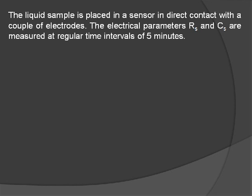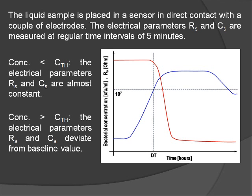The working principle of the impedance technique for bacterial concentration measurement is here presented. The sample under test is placed in a sensor vial that features a couple of electrodes to measure the electrical parameters. The sensor is incubated at a temperature favoring bacterial growth and the electrical parameters are measured at time intervals of 5 minutes. The sample bacterial concentration, plotted in blue, and the resistive parameter, plotted in red, are shown versus time. As can be seen, as long as the bacterial concentration is lower than a critical threshold on the order of 10 million colony forming units per milliliter, the electrical parameters remain essentially constant at their baseline values.